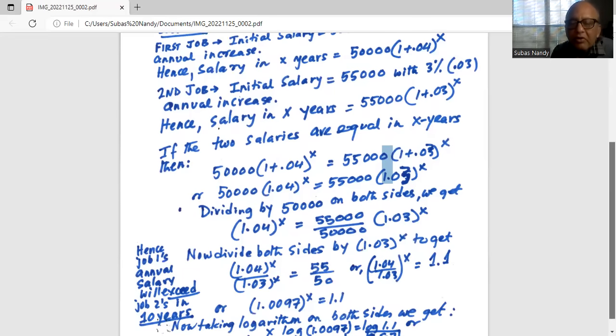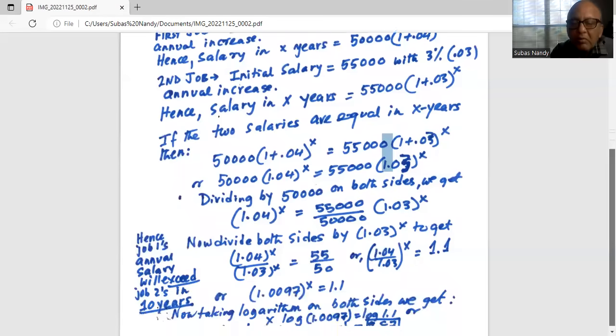1.04 divided by 1.03 is 1.0097. That is exponent X. So 1.0097 raised to the power of X equals 1.1.